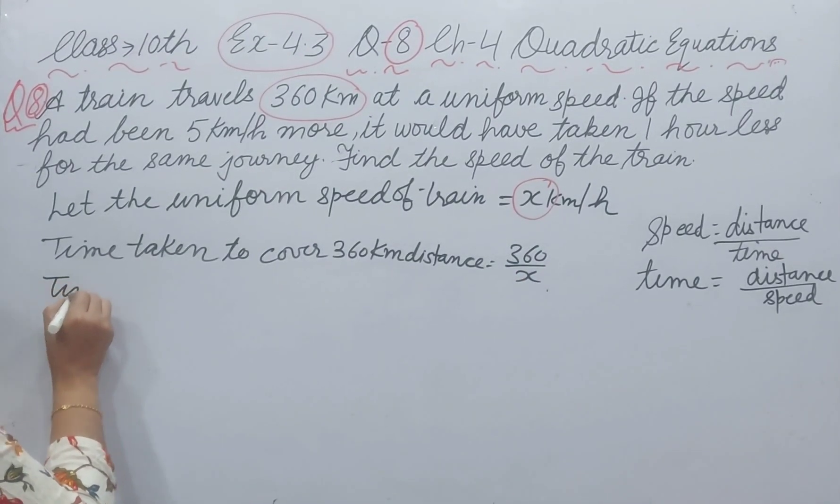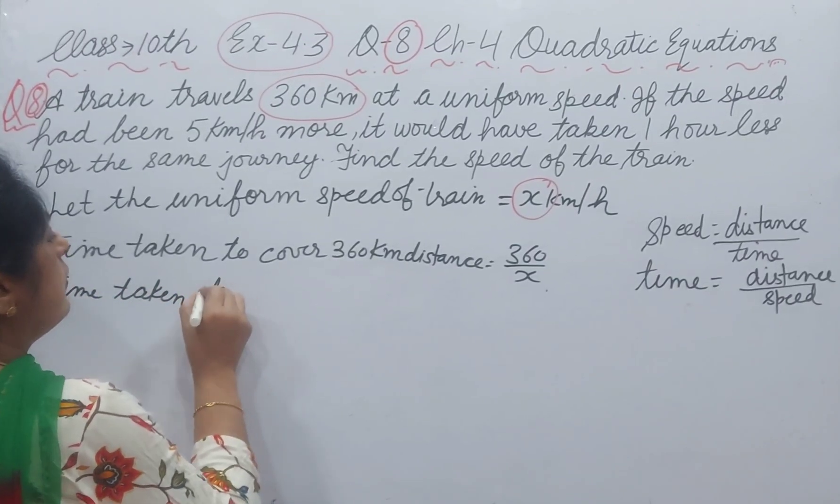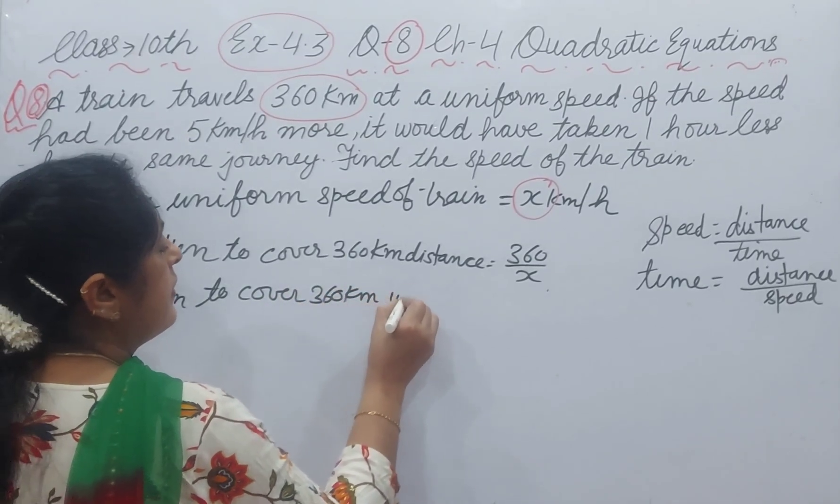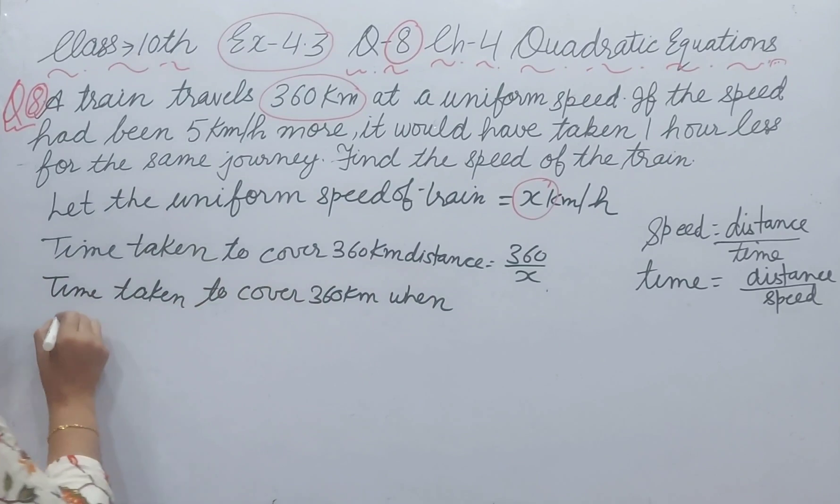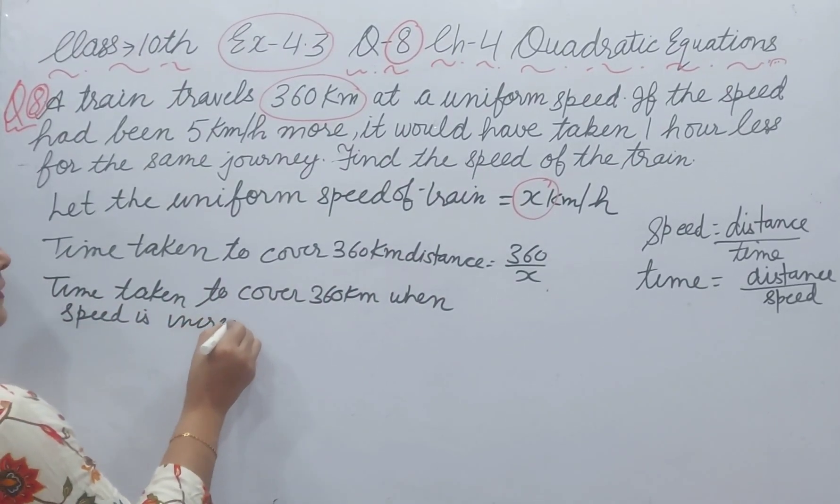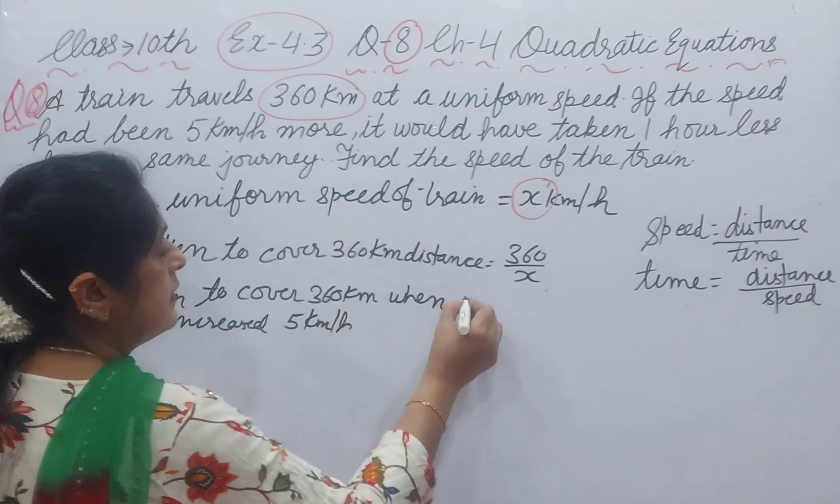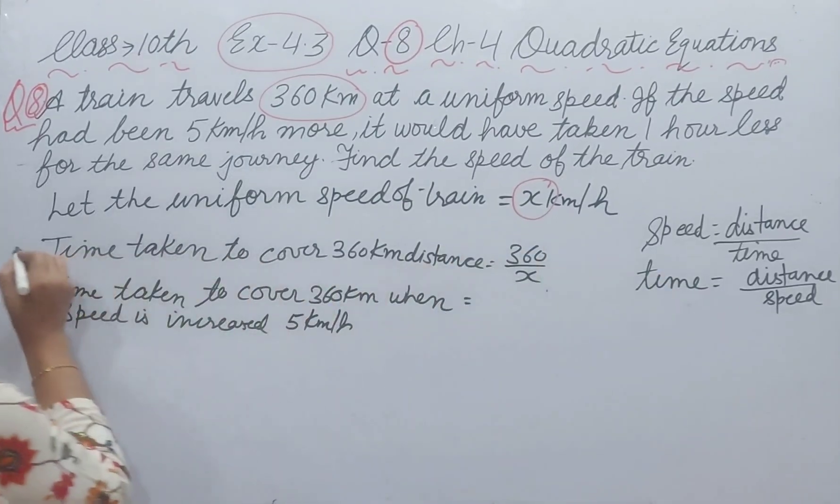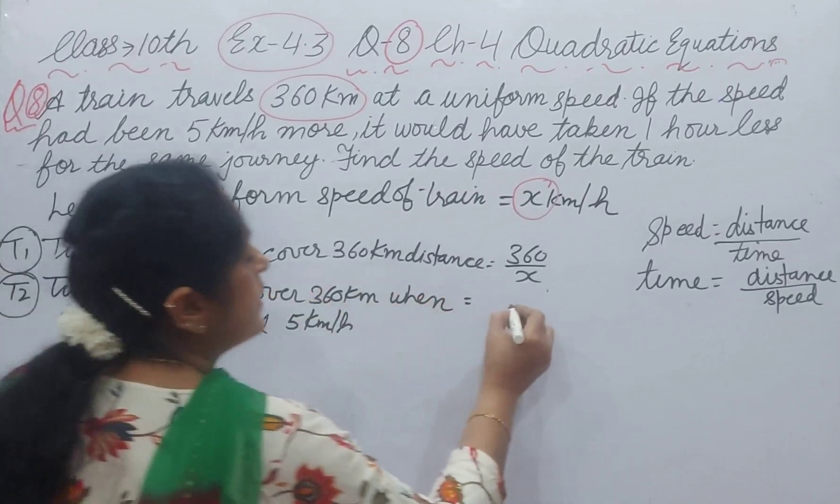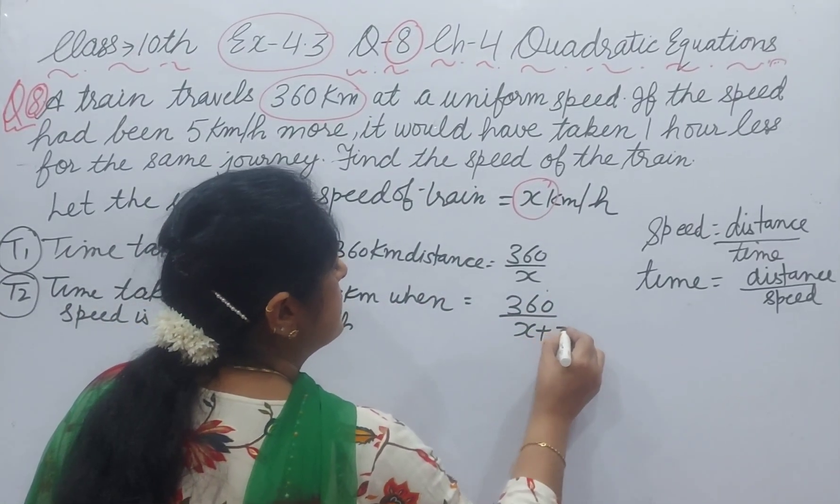Now, time taken to cover 360 km when speed is increased 5 km per hour. This is time 1 and this is time 2. 360 over x plus 5.